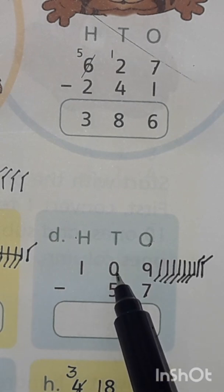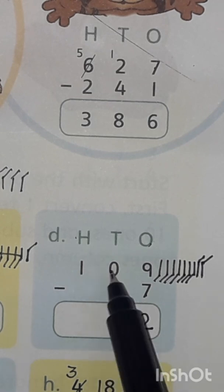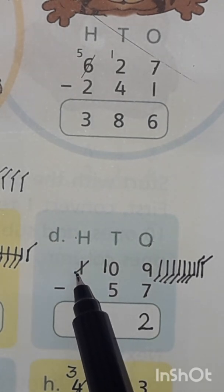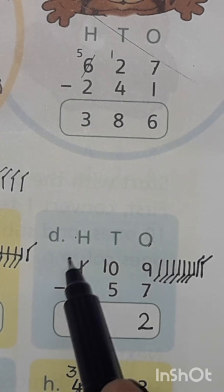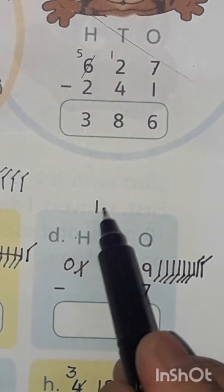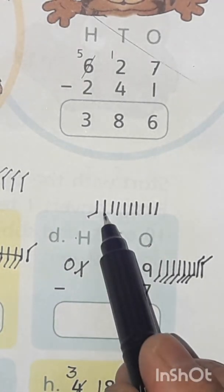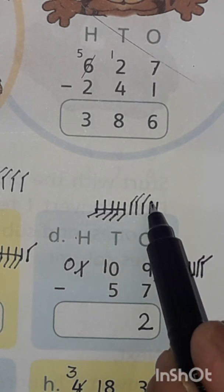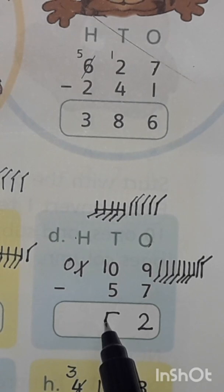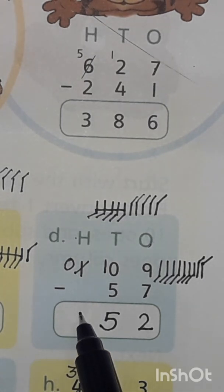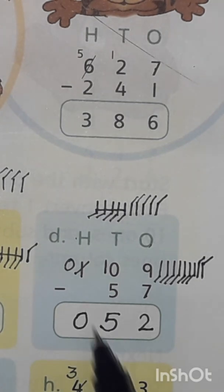0 and 5 — 0 is a smaller number. Take borrow from here. Make it 10. Draw 10 lines: 1 through 10. Cut 5 lines: 1, 2, 3, 4, 5. Write here 5. 0 has no value, but you can write it if you want. The answer is 52.